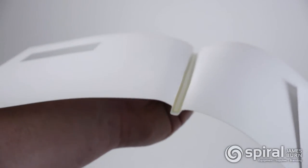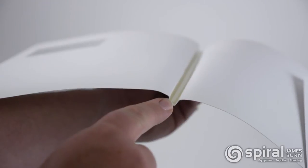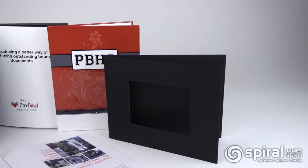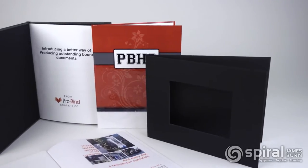ProBind covers have a unique U-shaped glue channel that securely holds documents together. Covers are available in a wide range of materials, including hardcovers.